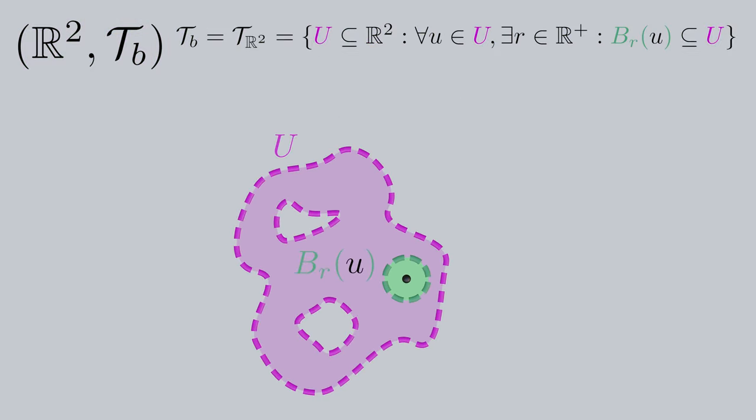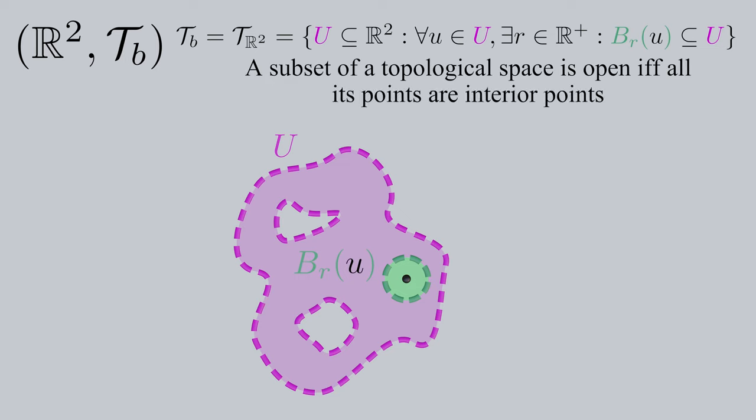An element little u of big U meeting the criteria of being able to form an open ball centered at little u where the ball is completely contained in big U is why we refer to the elements of an open set as interior points. We say that a subset of a topological space is open if and only if all its points are interior points.